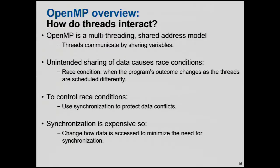So OpenMP, as we're using it right now, is a multi-threaded programming model. It's going to create a bunch of threads which are all going to do a bunch of work. Threads communicate by sharing variables — this is different from MPI. In MPI you package things into messages and move messages around. Here you have a whole bunch of threads that share an address space, and they interact by sharing variables, which is really wonderful.